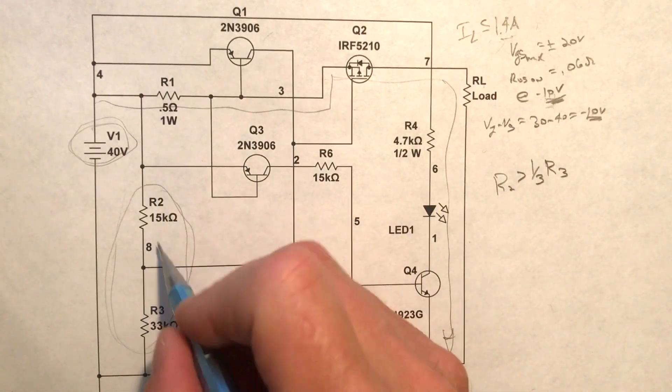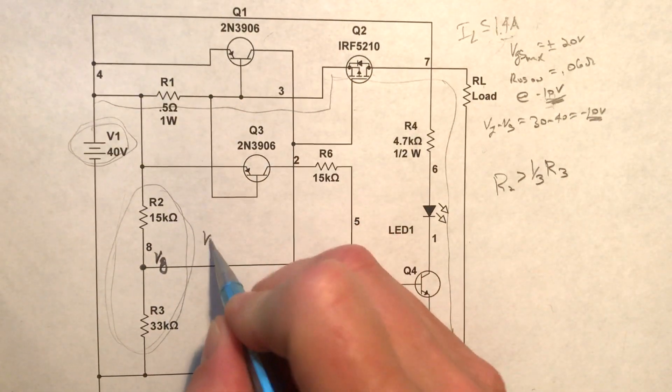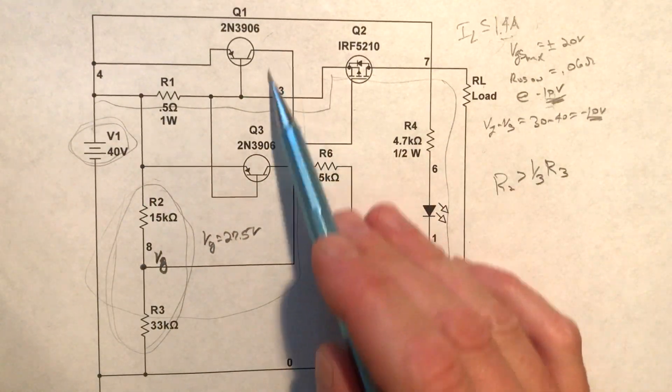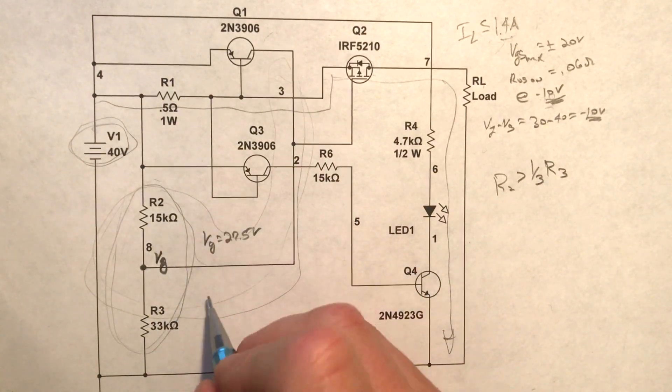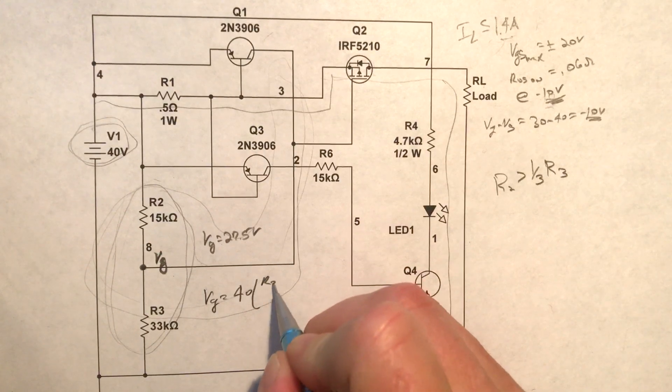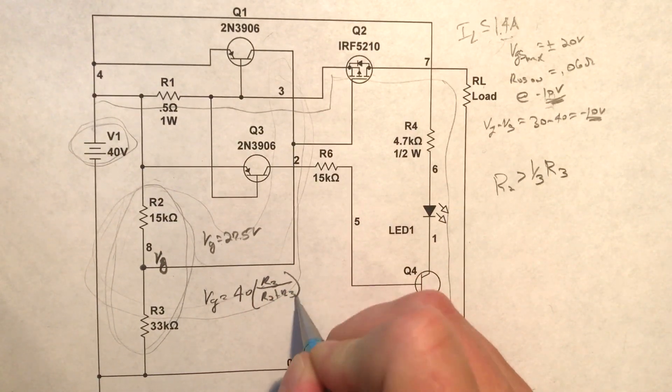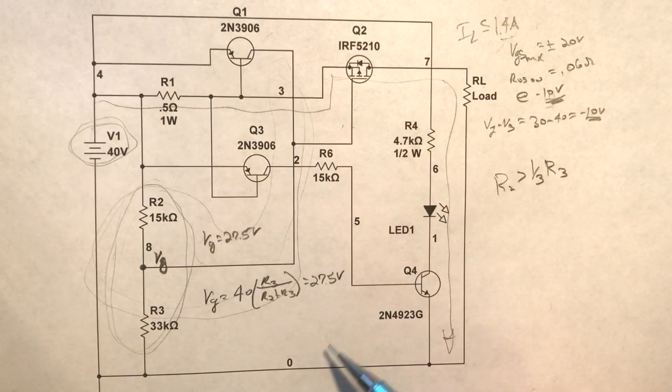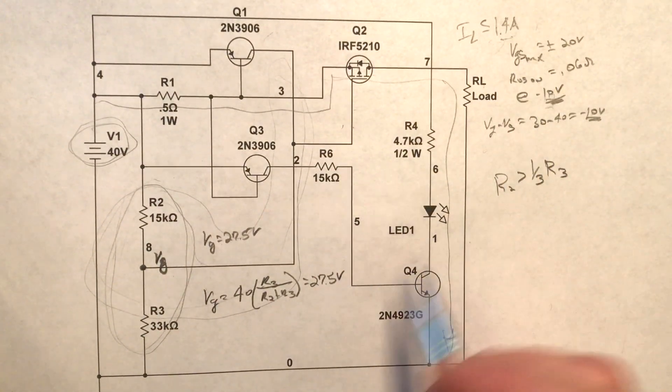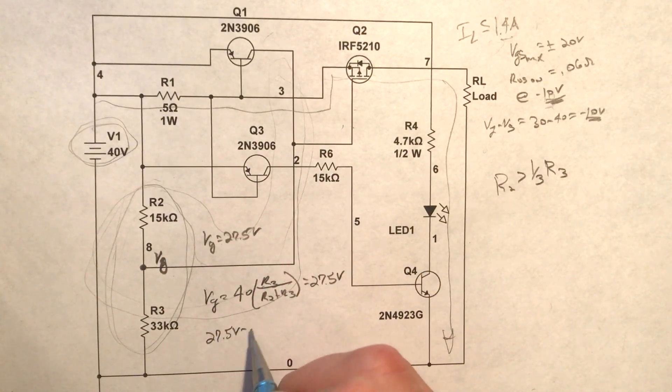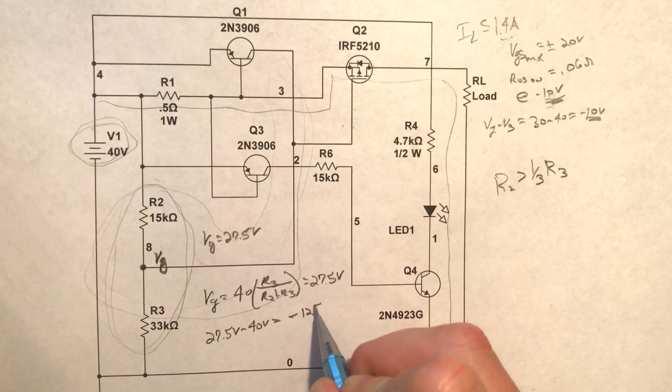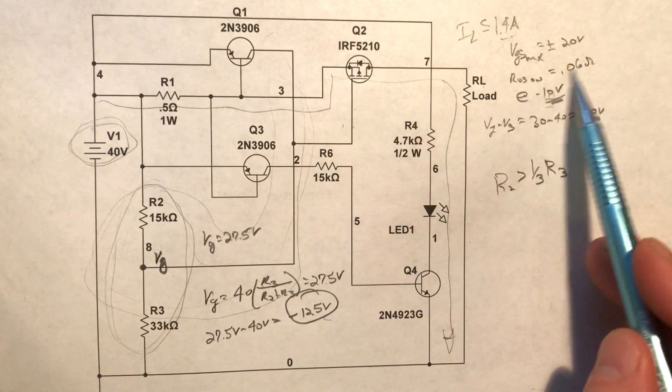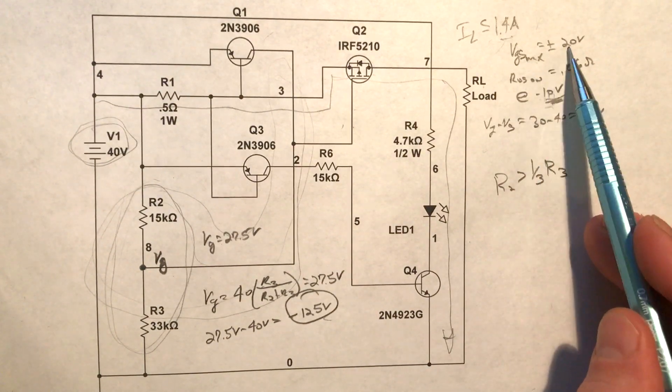So anyway, in this case if we call this V sub G, this value, this voltage right here, then this V sub G is 27.5 volts. So that's really easy to come up with just by looking at this little piece right here which is simply a voltage divider, right? So we get V sub G is equal to 40 times R sub 3 over R sub 2 plus R sub 3 and that's equal to 27.5 volts. Now again, that's the gate voltage, that's the voltage from this point to the ground. What we're actually interested in looking at is the V sub GS. So the V sub GS is going to be our 27.5 volts minus 40 volts which is equal to minus 12.5 volts. And again, this is a good value because it's well below what's going to be required to turn this MOSFET fully on and make the resistance as small as possible without getting anywhere near this maximum gate to source voltage.